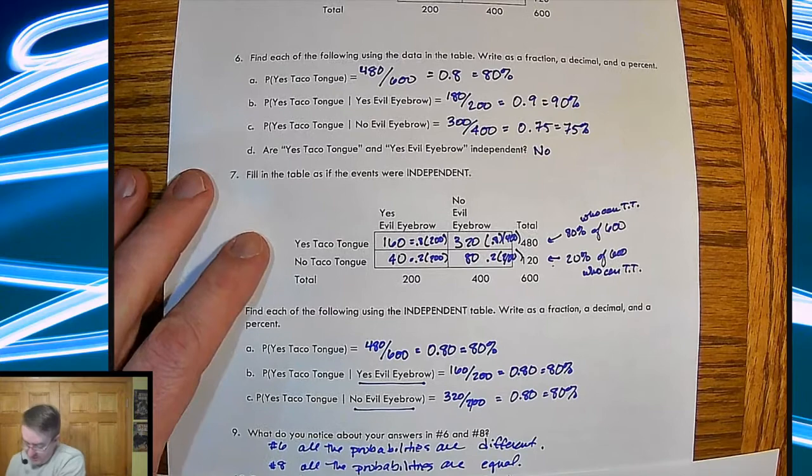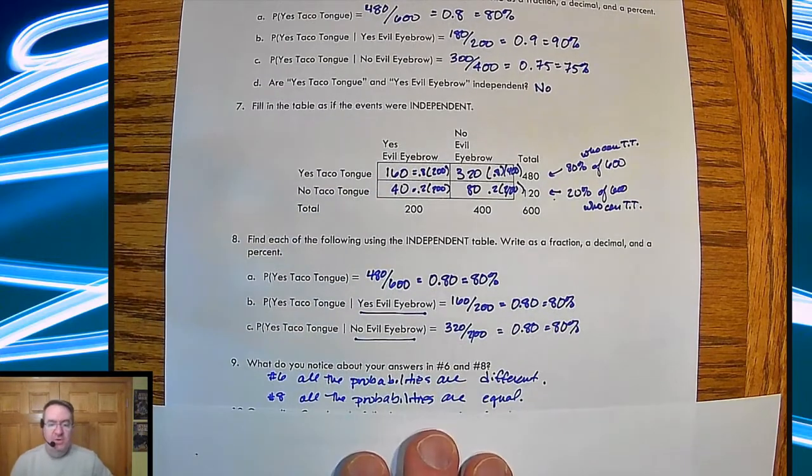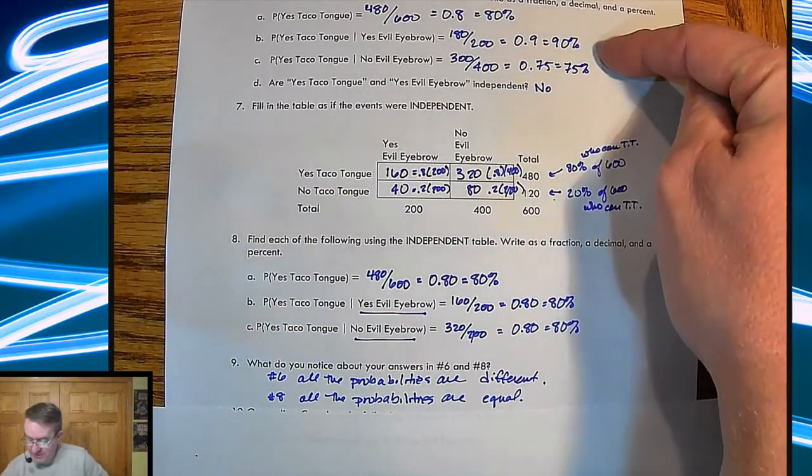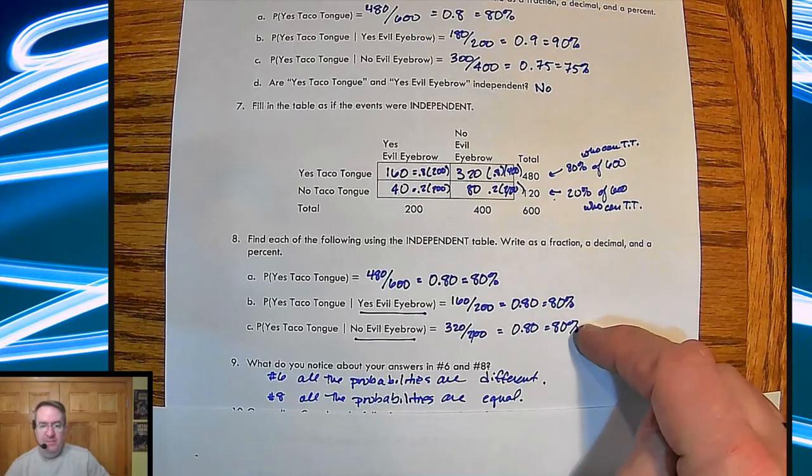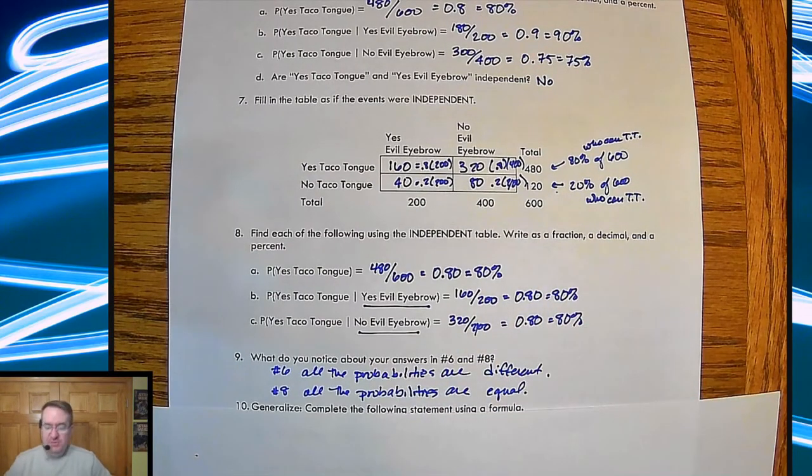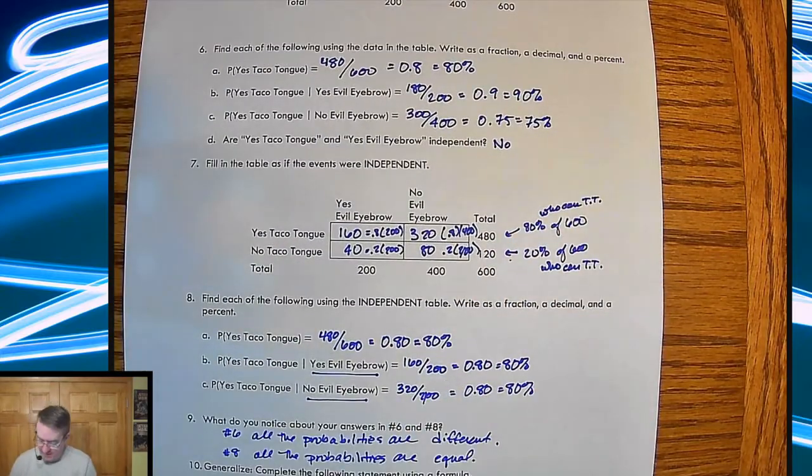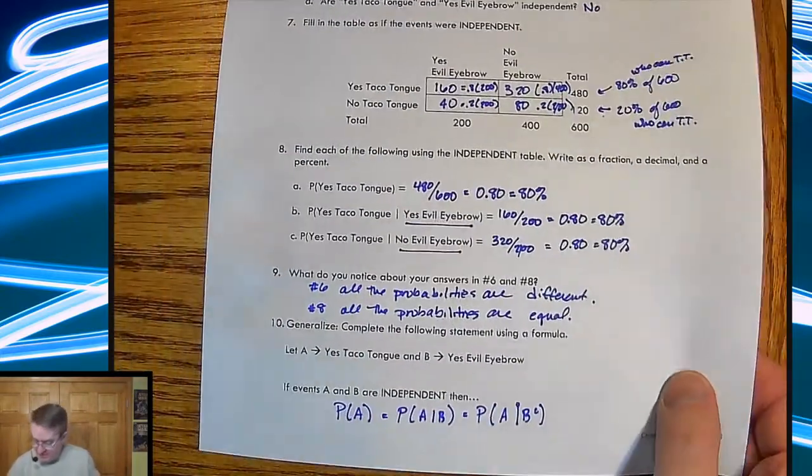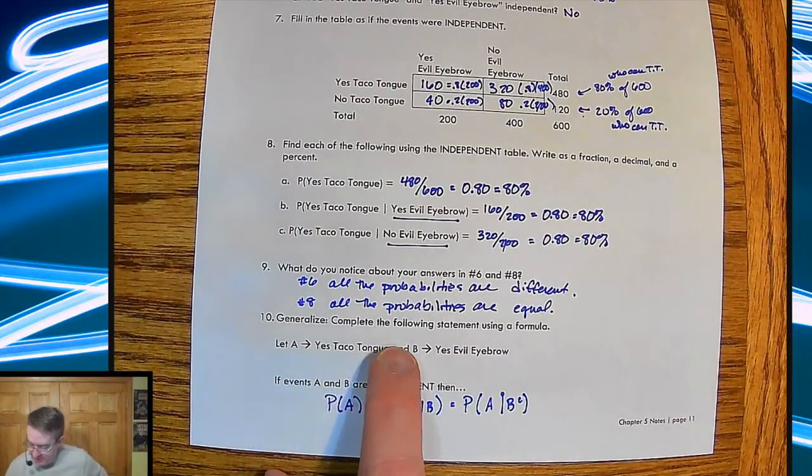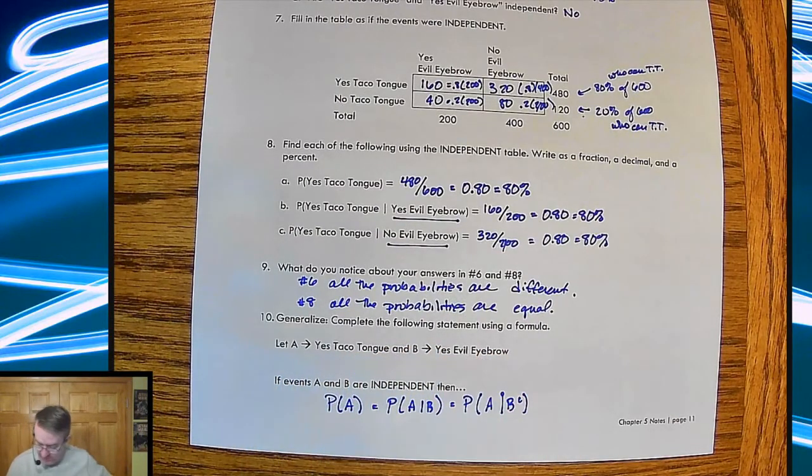So, oh, and actually got ahead of myself. So number nine, what do you notice about all of them? Problem number six, these are all different. These are all the same. So that's the difference between not independent and independent. So when you generalize this, what ends up happening is so generalize, complete the following statement using a formula.